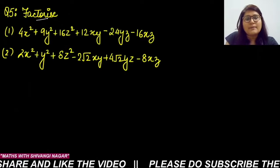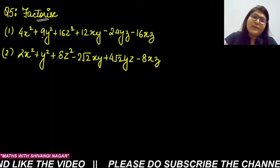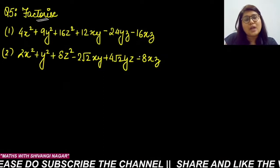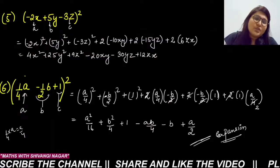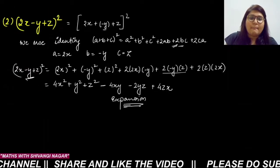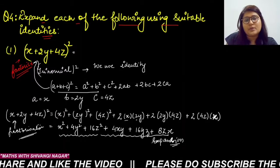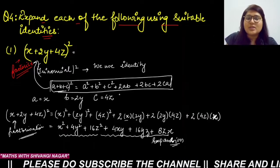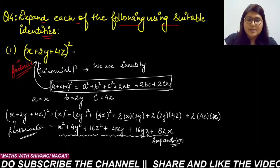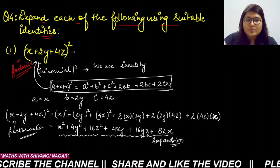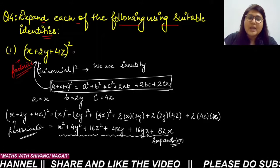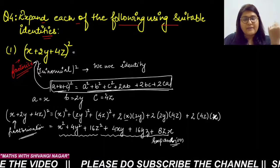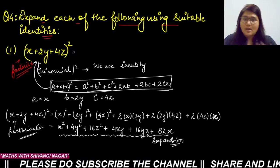Question 5 is about factorization. The expanded form has 6 terms — 3 perfect square terms and 3 terms which are twice the product of pairs taken at a time. This corresponds to the (a + b + c)² identity.